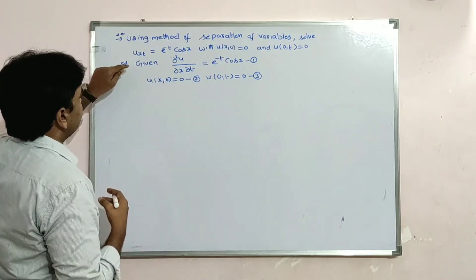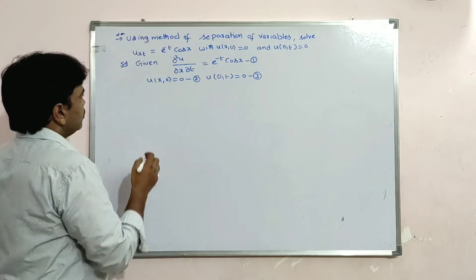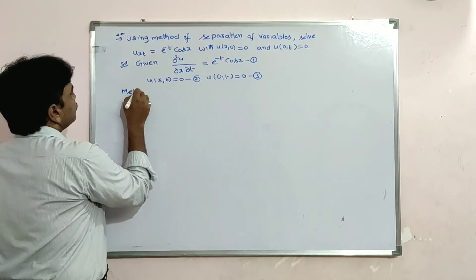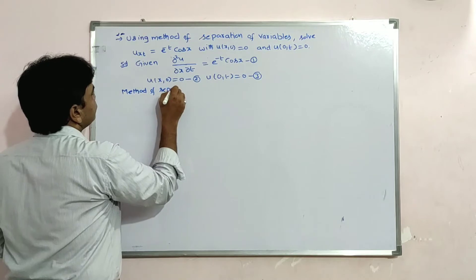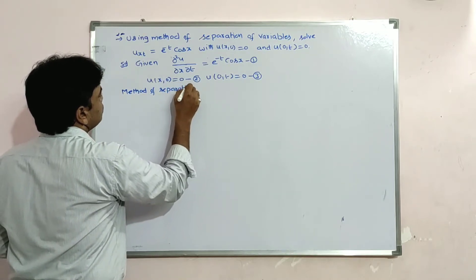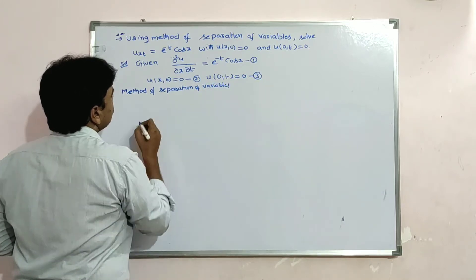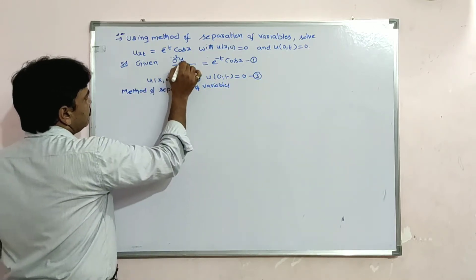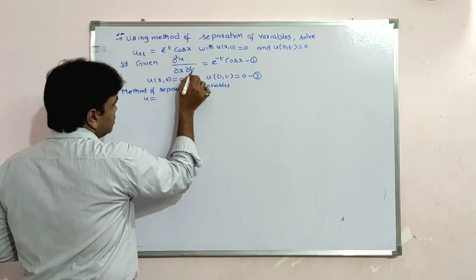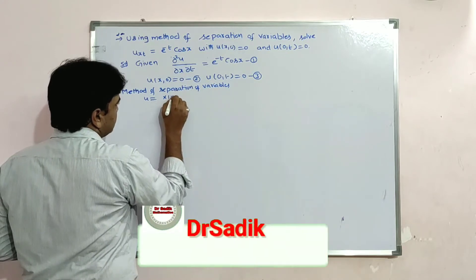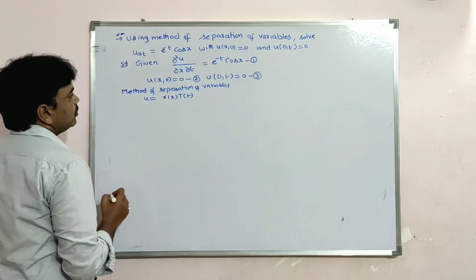Now we apply the method of separation of variables. The dependent variable u is equal to a product of the independent variables, so we write u = X(x)·T(t). Say this is equation 4.